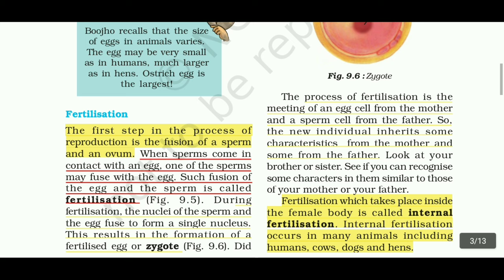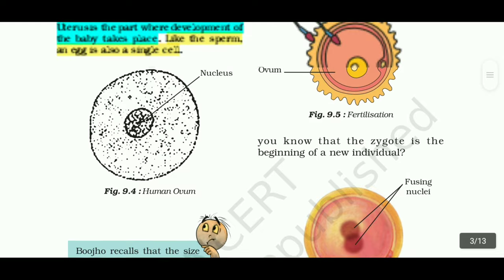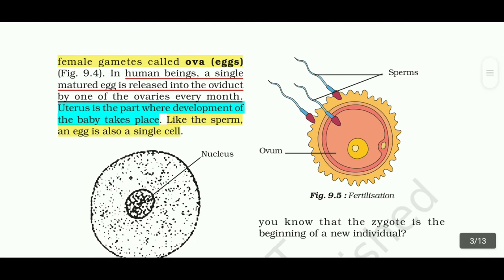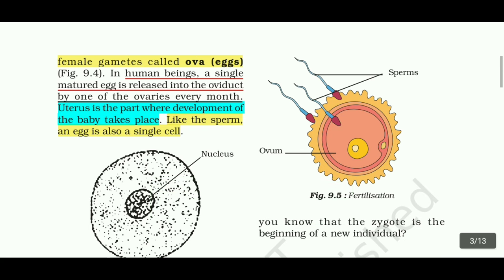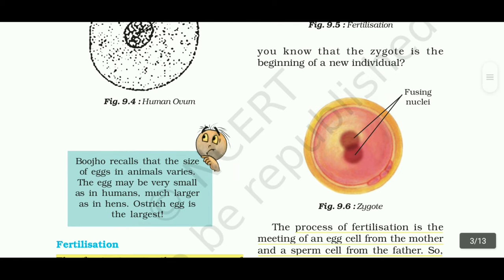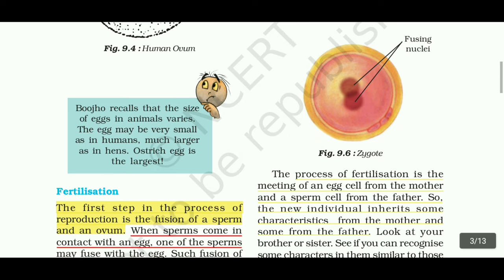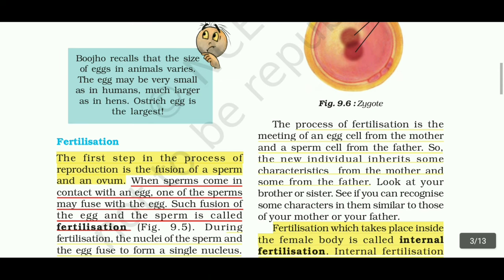The zygote develops into a new individual. The process of fertilization is the meeting of an egg cell from the mother and a sperm cell from the father. So the new individual inherits some characteristics from the mother and some from the father.